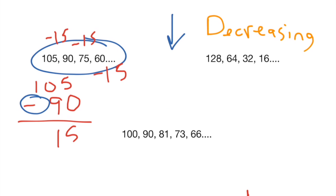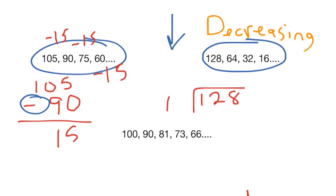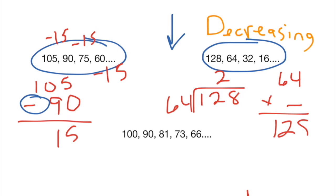When your numbers seem to be getting really small really fast, just like in the increasing pattern where that meant multiplication, this is the opposite — we're looking at division. You could take 128 and divide by 64 and you'd get 2. Or you could say: what would I have to multiply 64 by to get 128? In this case it's the opposite of multiplying by 2, which is going to be dividing by 2.